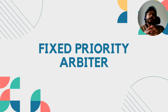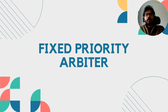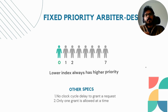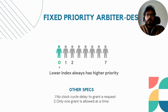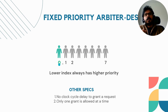There are different types of arbiters — fixed priority, round robin, etc. Let's talk about fixed priority arbiters in this session. In fixed priority arbiters, the arbitration scheme is fixed. In the case we are discussing today, there are eight requesters, and the lowest-numbered requester always has the highest priority.